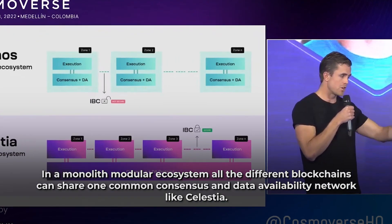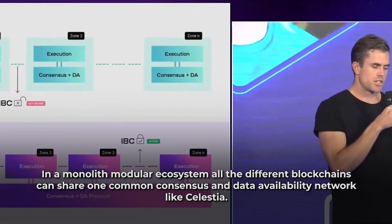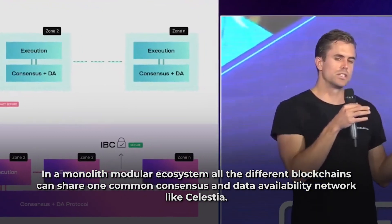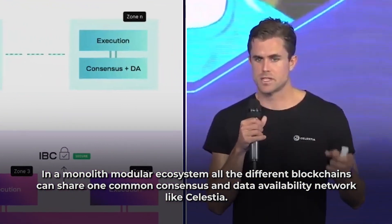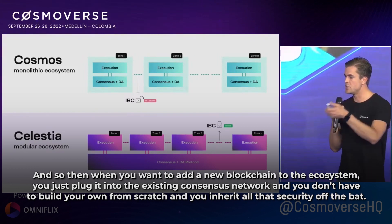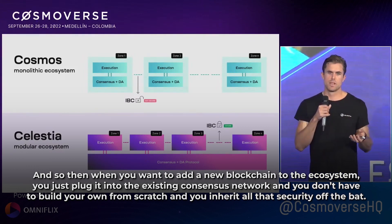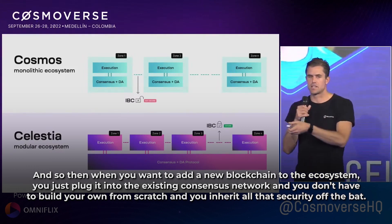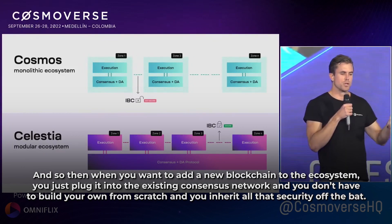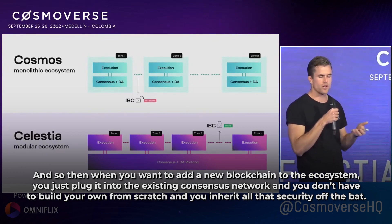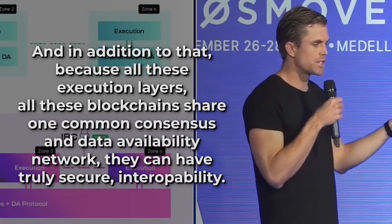In a modular ecosystem, all the different blockchains can share one common consensus and data availability network, like Celestia. So when you want to add a new blockchain to the ecosystem, you just plug it into the existing consensus network — you don't have to build your own from scratch, and you inherit all that security off the bat.